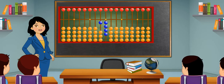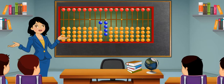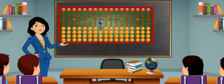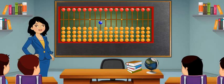To show number 15, one on the tens place, and bring four earthen beads down on the ones place and make one heaven bead touch the skyline to show five on the ones place. This is number 15.